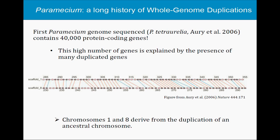The reason for this abundance of protein-coding genes is the presence of many, many duplicated genes. Here on this figure, you can see the genes alongside chromosome 1 and chromosome 8. These red and blue lines link together genes that are paralogues — copies of each other that can be identified through sequence similarity. You can see that most genes on chromosome 1 have a paralogue on chromosome 8.